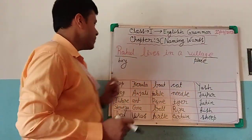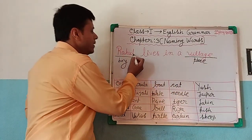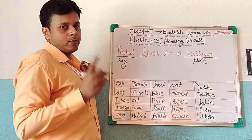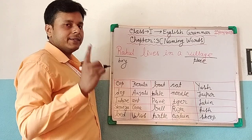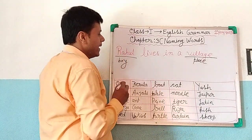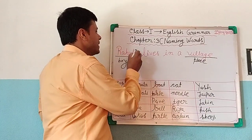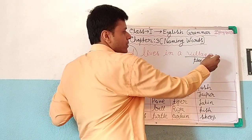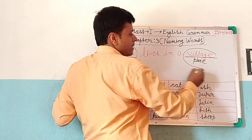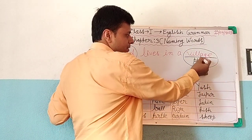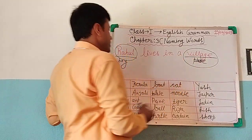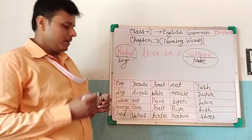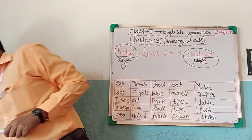So, if I ask you what the naming word is here — Rahul. Rahul refers to a boy, a particular boy, and it is the name. Village is the name of a place, and Rahul is the name of a boy. Let me give you another example.